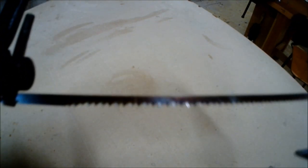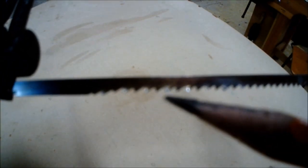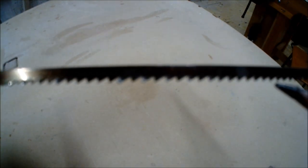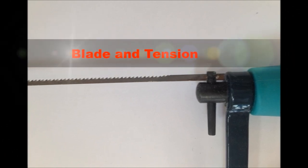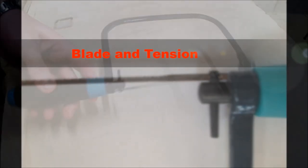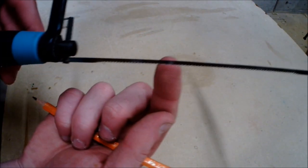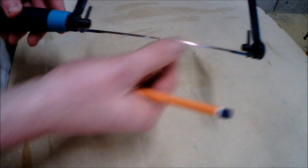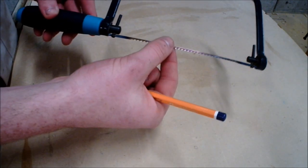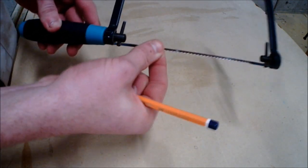There are many different reasons and principles for this which will be discussed throughout the video. The teeth face backward because it cuts on the backstroke. This provides good tension as the blade is tightened from the handle.